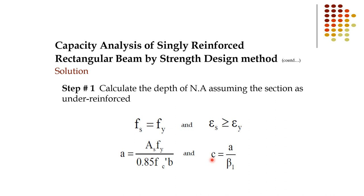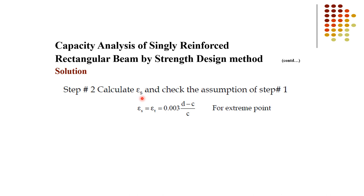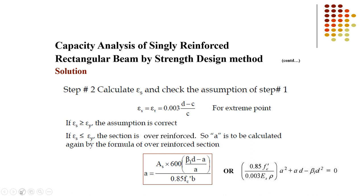Step 2: Calculate the strain in steel and verify the assumption from Step 1. Using the value of c and d, calculate the steel strain. If the strain in steel is greater than or equal to the yield strain, the assumption is correct and we proceed with the under-reinforced moment capacity calculation.